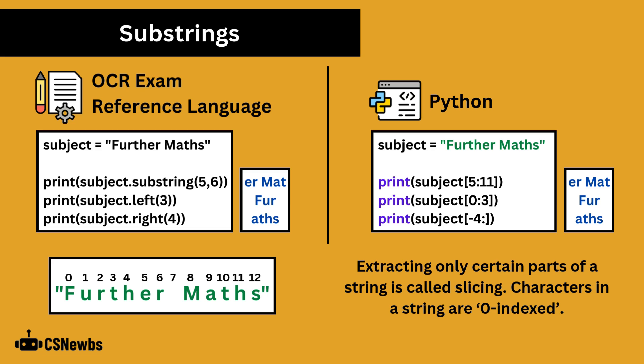Extracting only certain parts of a string is called slicing. Characters in a string are zero indexed. Each character in a string has an index and this starts at zero, not one.